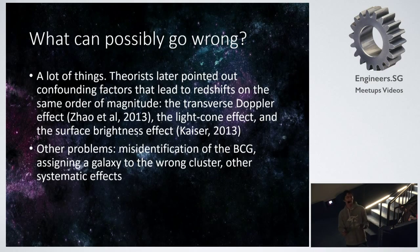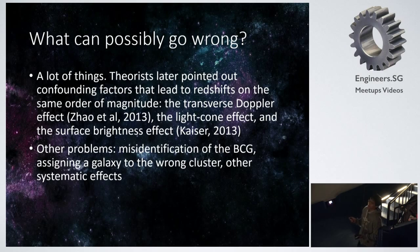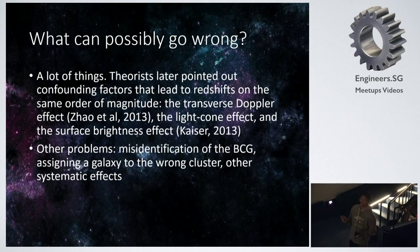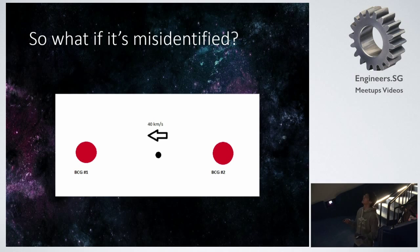What can possibly go wrong with this measurement? From what I've presented, it looks quite foolproof, but it's not. There are many additional effects: the transverse Doppler effect can change the redshift you see; light cone effects and the surface brightness effect can also change how bright the thing appears. And then we have misidentification of the BCG — if you identify the wrong galaxy as a BCG, you have an absolute problem. In this image, if there are two BCGs and a galaxy is moving at 40 kilometers per second towards the left, but you identify it relative to the other BCG, then it appears to be receding at 40 kilometers per second, resulting in an error.